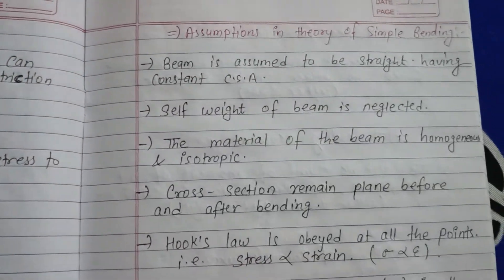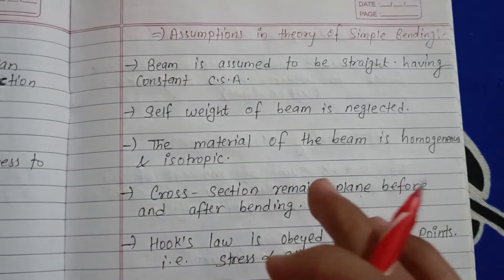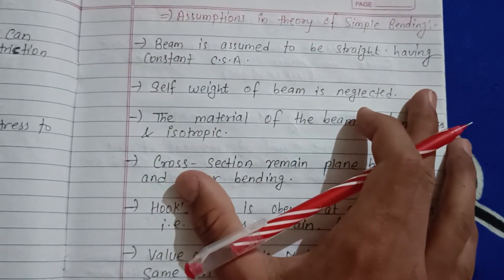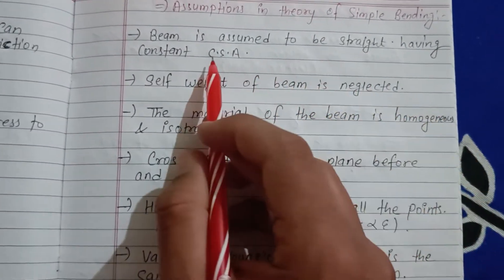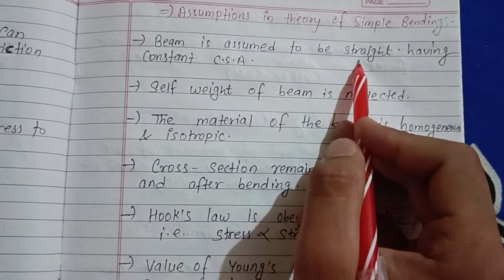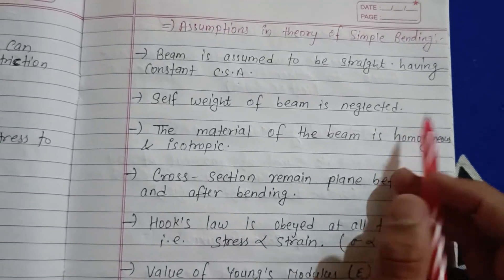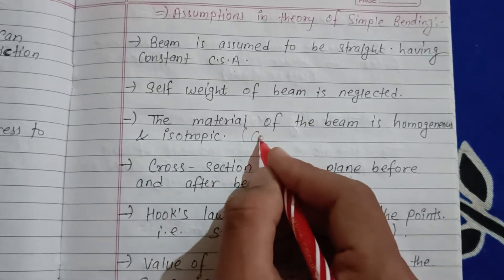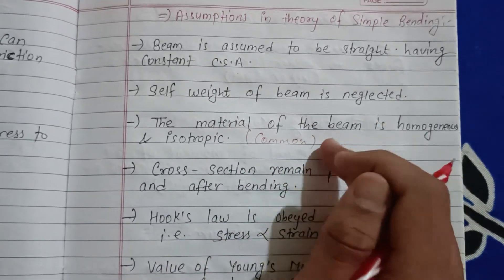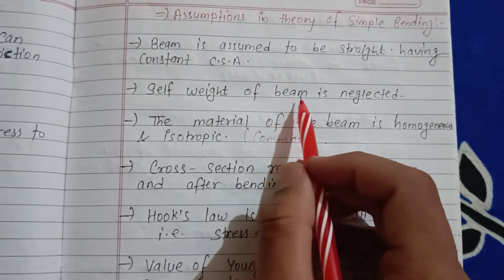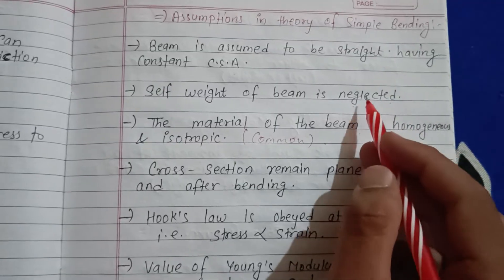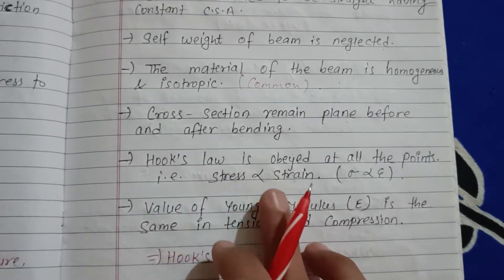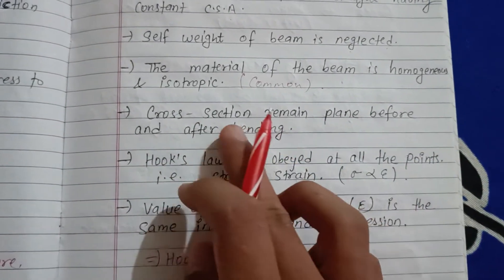Assumptions in theory of simple bending: the beam is assumed to be straight with a constant cross-sectional area. The self-weight of the beam is neglected. The material of the beam is homogeneous. Plane sections of the cross-section remain plane before and after bending.